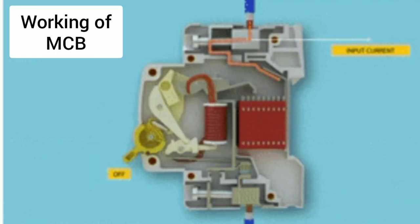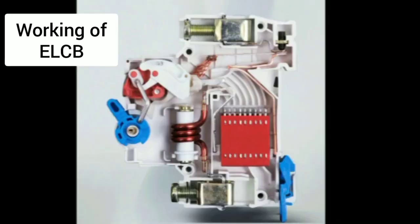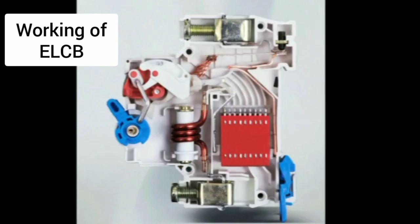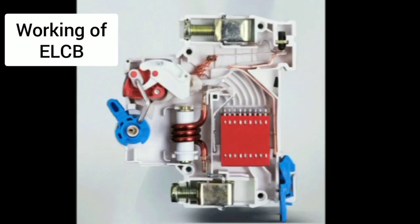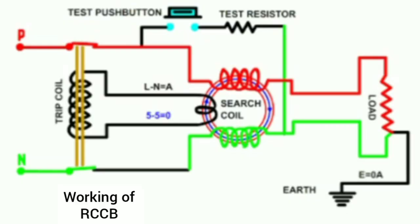This circuit will not be able to turn off normally. This is the inner arrangement of the ELCB — the bimetallic strip is not available here. This is the inner arrangement of the relay coil. The circuit will be attached to the relay coil — this is the inner arrangement using modern technology.